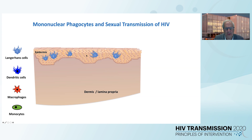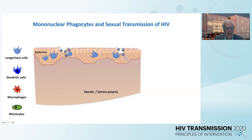The major immune cell target in the epidermis of the anogenital epithelium is Langerhans cells. There's quite a lot of evidence that these cells are targeted by HIV. They may be targeted either in mucosa, which has a thin or absent cornified layer or stratum corneum, such as vagina or inner foreskin, or through micro-abrasions, which may even lead down into the dermis.